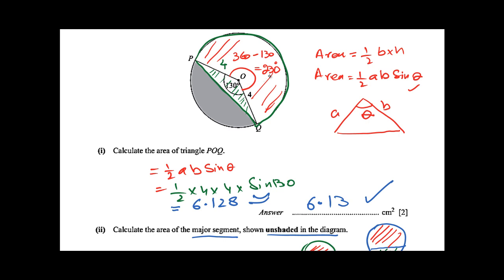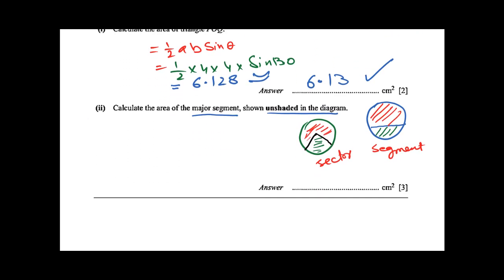Now we will apply the area of sector. And we know that area of sector is equal to θ over 360 times π r².